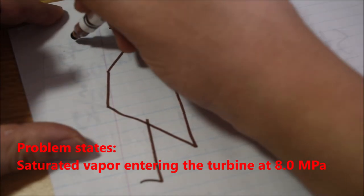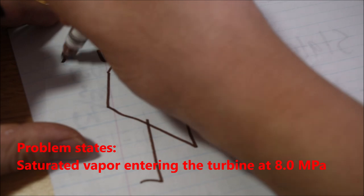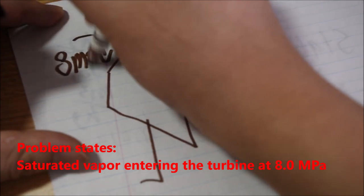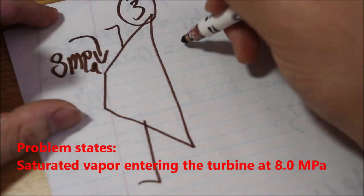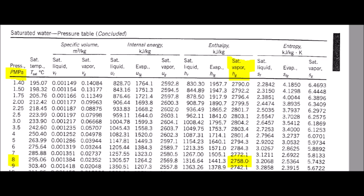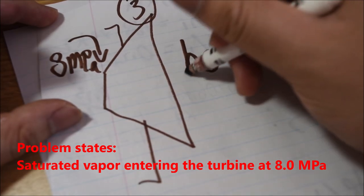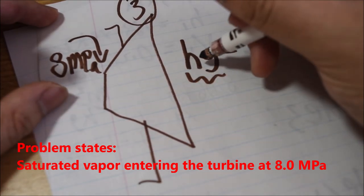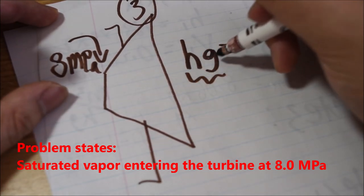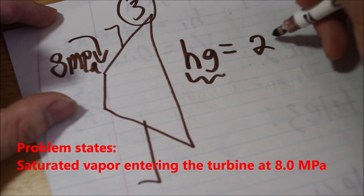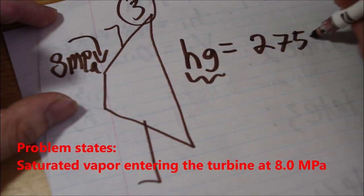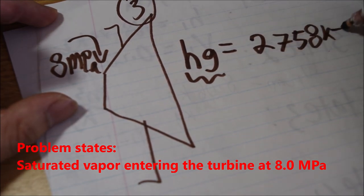At state 3, we know that the pressure going into the turbine is 8 megapascals. Therefore, by looking at the table at 8 megapascals, we look at the enthalpy at the vapor state and we find the value for h3.